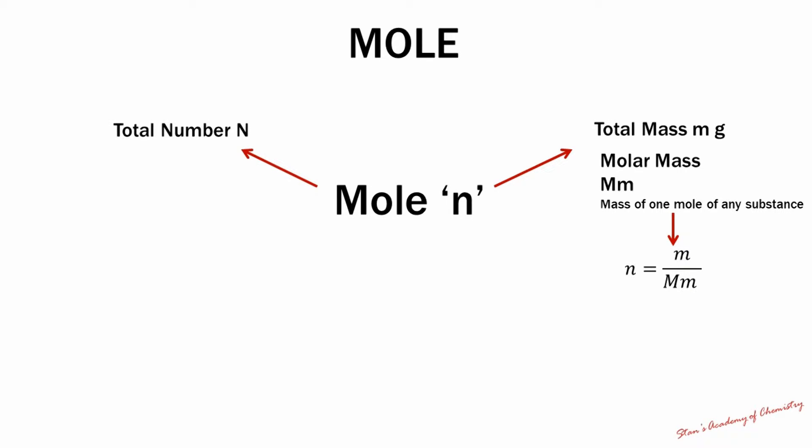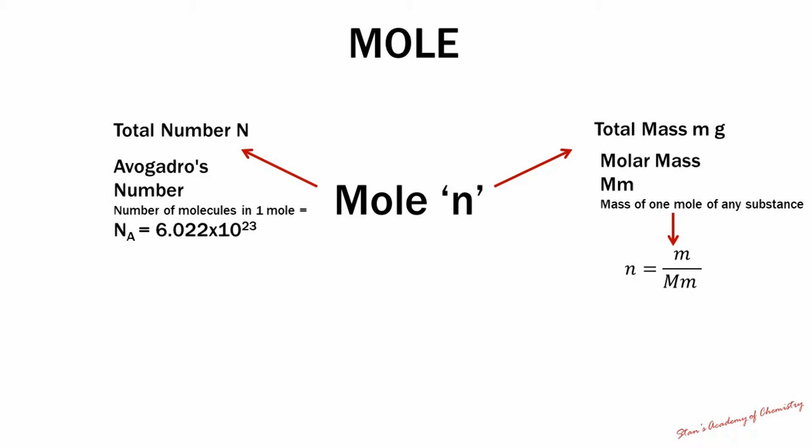Moles can also be related to number. If you know the total number of molecules present, you can divide it by Avogadro's number to obtain the number of moles. Avogadro's number is the number of entities present in one mole. The number of moles n (lowercase) is equal to N (uppercase) divided by Nₐ, the symbol for Avogadro's number. This is the second method to determine the value of n, or moles, from number.